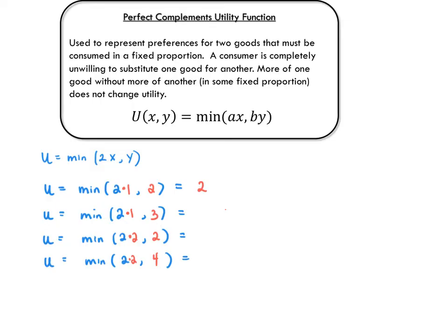Now consider keeping x at one, but increasing y from two to three. The utility of this new bundle is the min of two and three, or the lower of the values two and three, where the lower of the values two and three is still a two. What this demonstrates is that we can keep x the same and increase y, but doing so won't change utility.